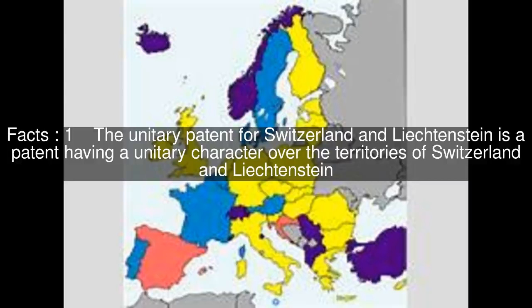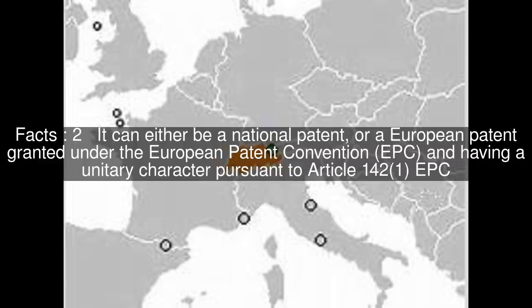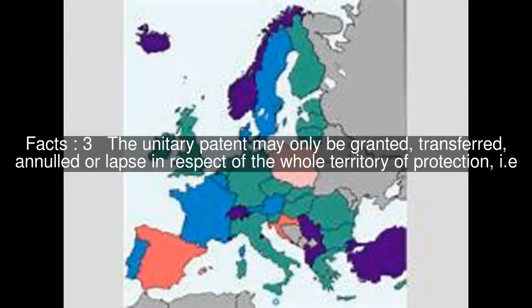The unitary patent for Switzerland and Liechtenstein is a patent having a unitary character over the territories of Switzerland and Liechtenstein. It can either be a national patent, or a European patent granted under the European Patent Convention, and having a unitary character pursuant to Article 142. The unitary patent may only be granted, transferred, annulled, or lapse in respect of the whole territory of protection.